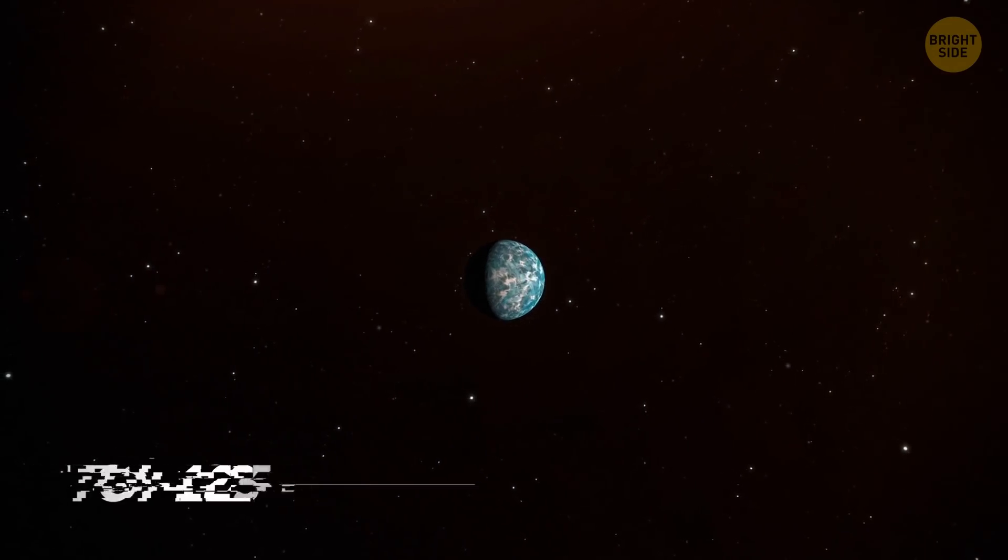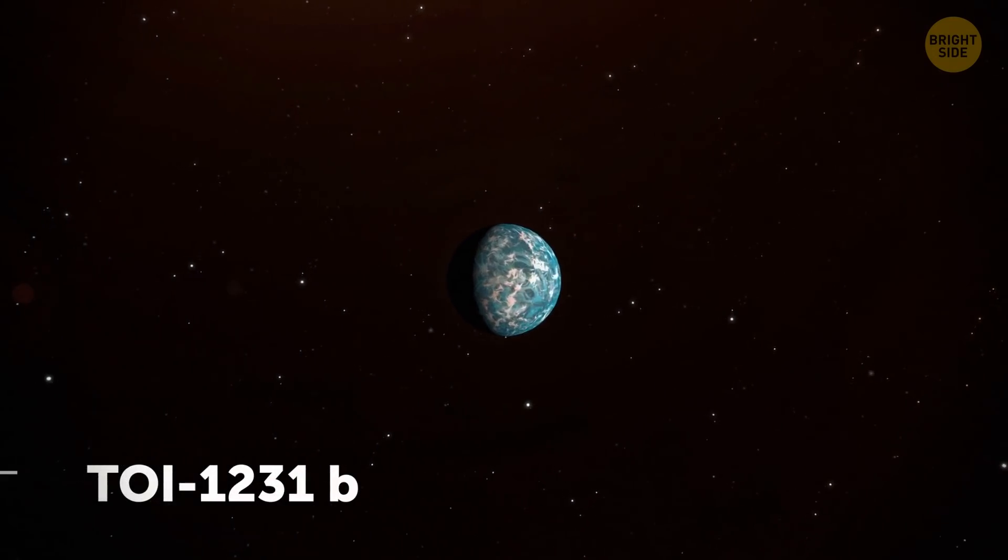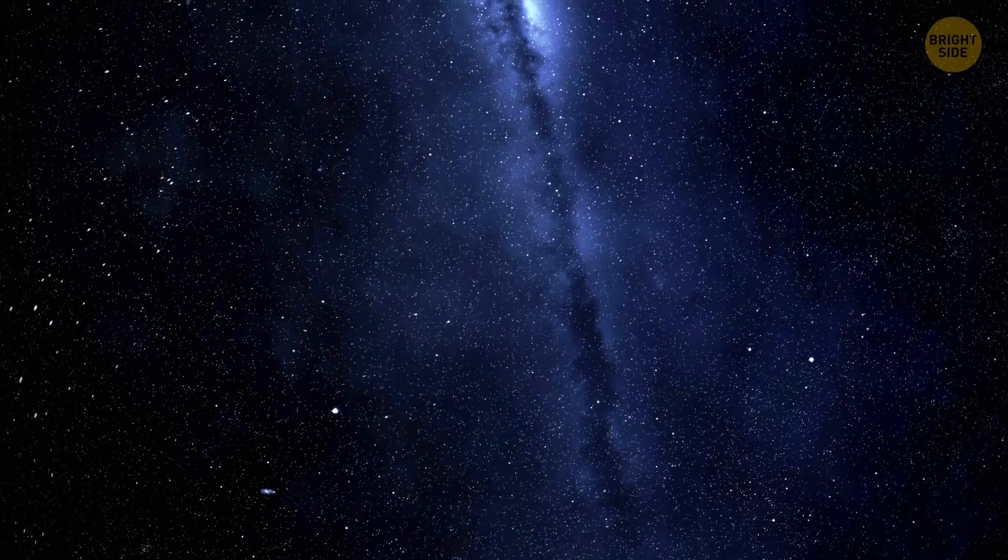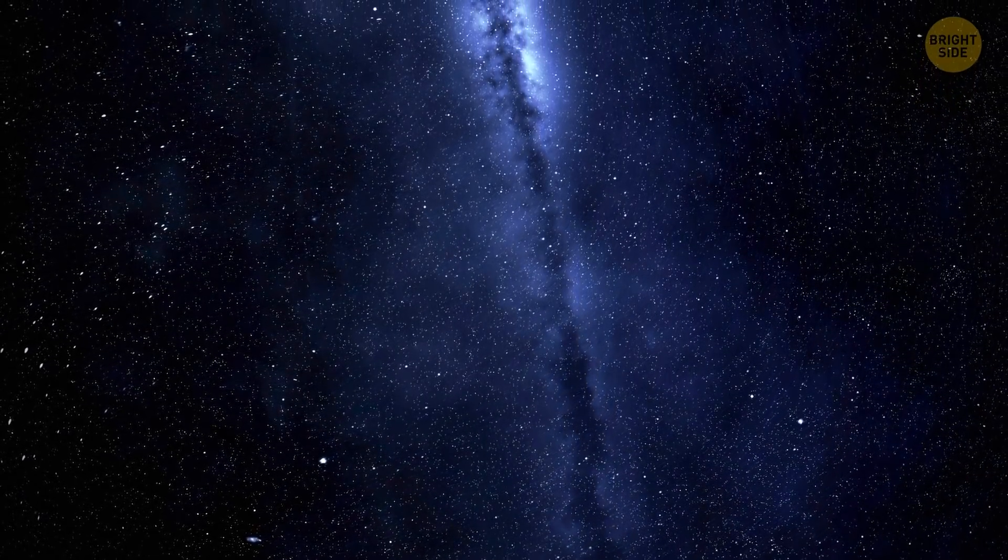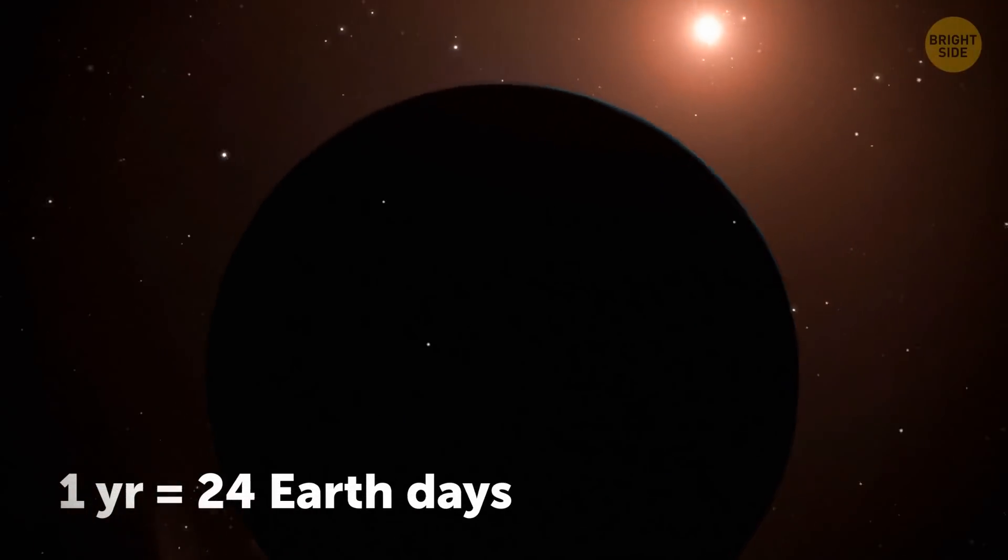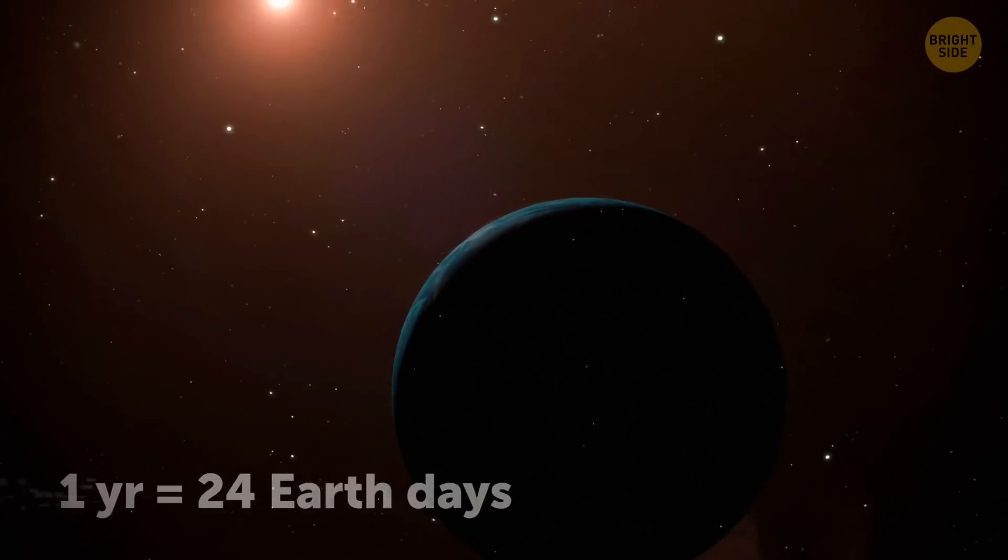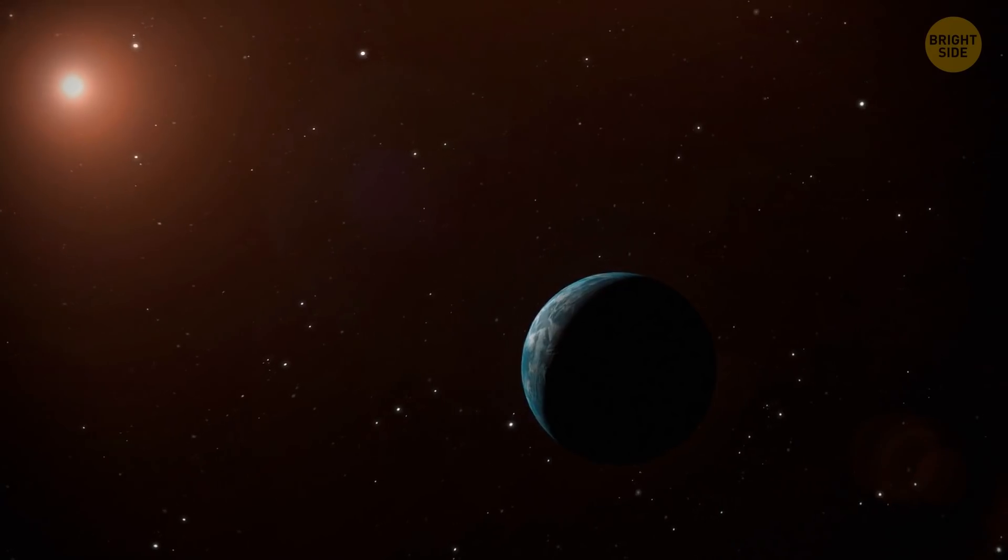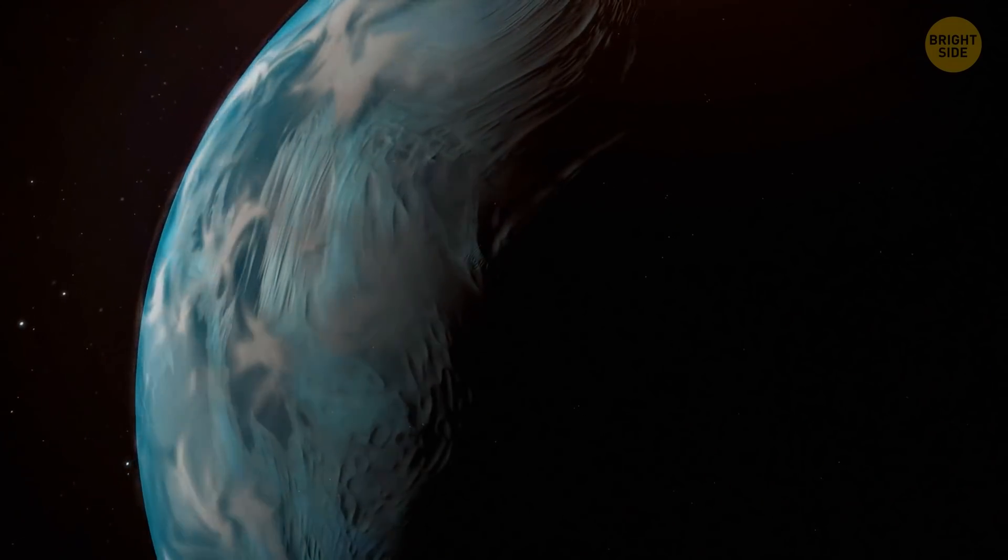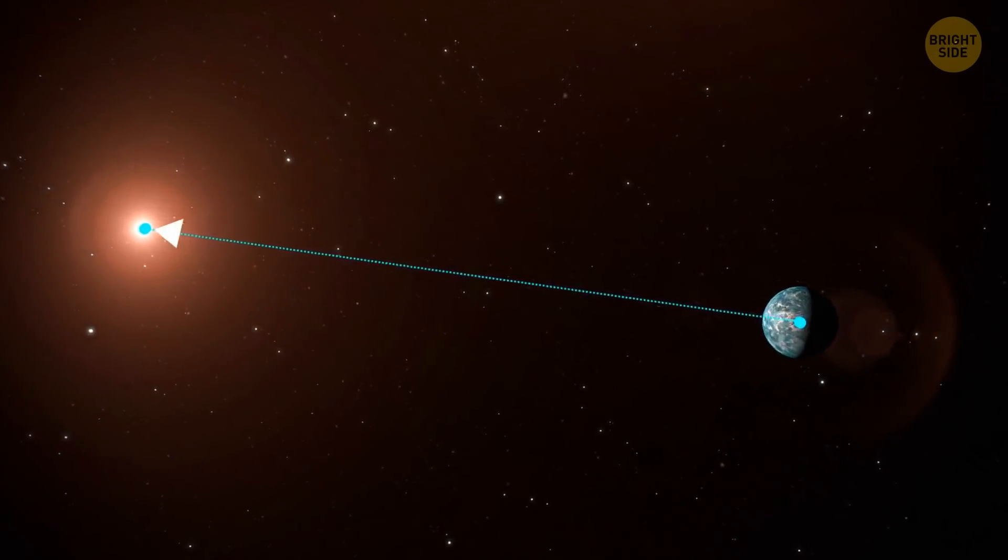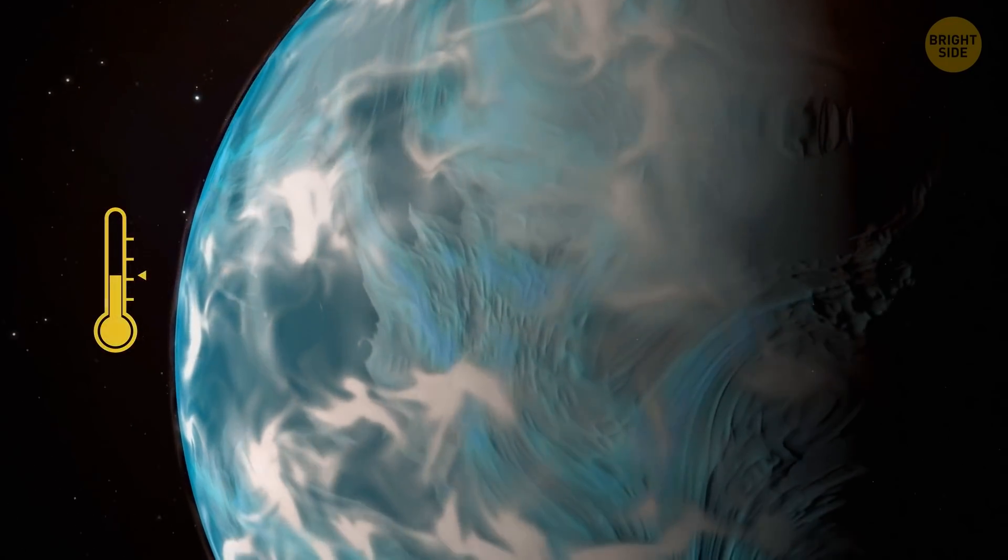Moving on to an interesting exoplanet, located only 90 light-years away from us. An exoplanet is generally a planet located outside our solar system. This one has an atmosphere with water clouds. One year there lasts 24 Earth days. The planet travels around a red dwarf star, which is way dimmer and smaller than our Sun. That's why, even though the planet is 8 times closer to its star than we are to our Sun, the temperature there is similar to that on our planet.